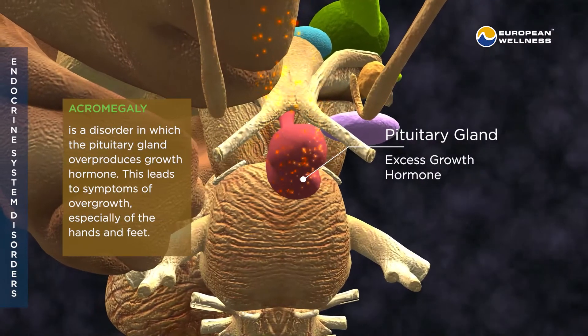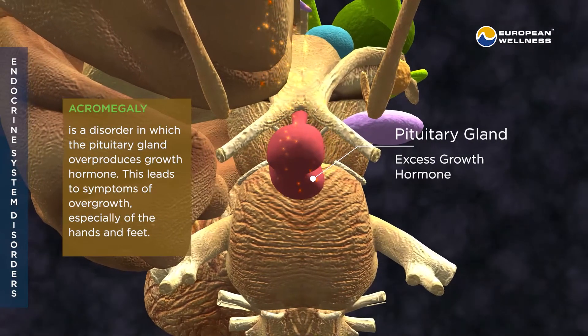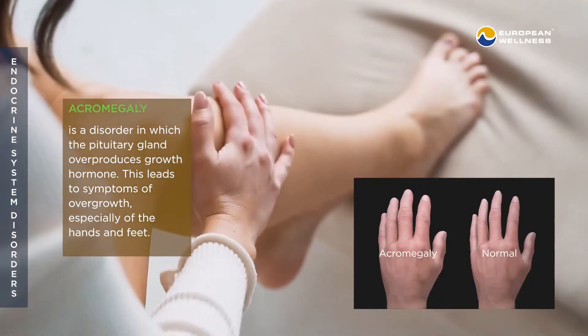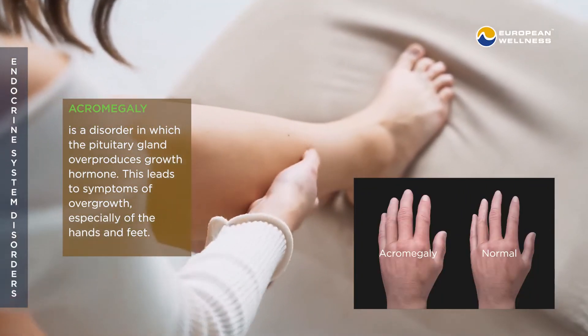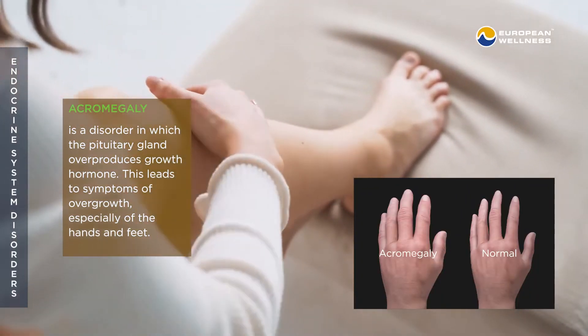Acromegaly is a disorder in which the pituitary gland overproduces growth hormone. This leads to symptoms of overgrowth, especially of the hands and feet.